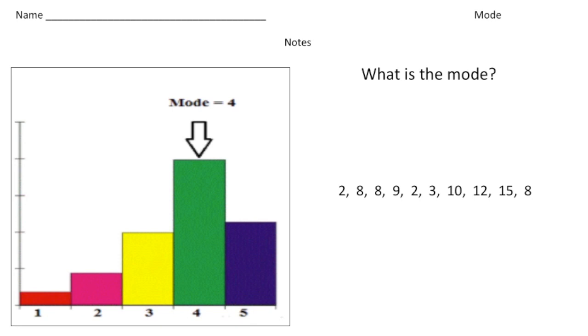All right, so what exactly is the mode? Well, the mode is just another word for the word most. The mode is the value that occurs the most. Anytime you see the word mode, think of the word most—it's another four letter word.